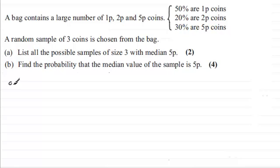So let's start with part A. If we're to list down all the possible samples of size 3 with median 5p, remember that the middle number must be 5. If they're arranged in order of size, we could pick a 1 and then the 5, and then after that we can't have another 1 or 2, we've got to have another 5p coin.